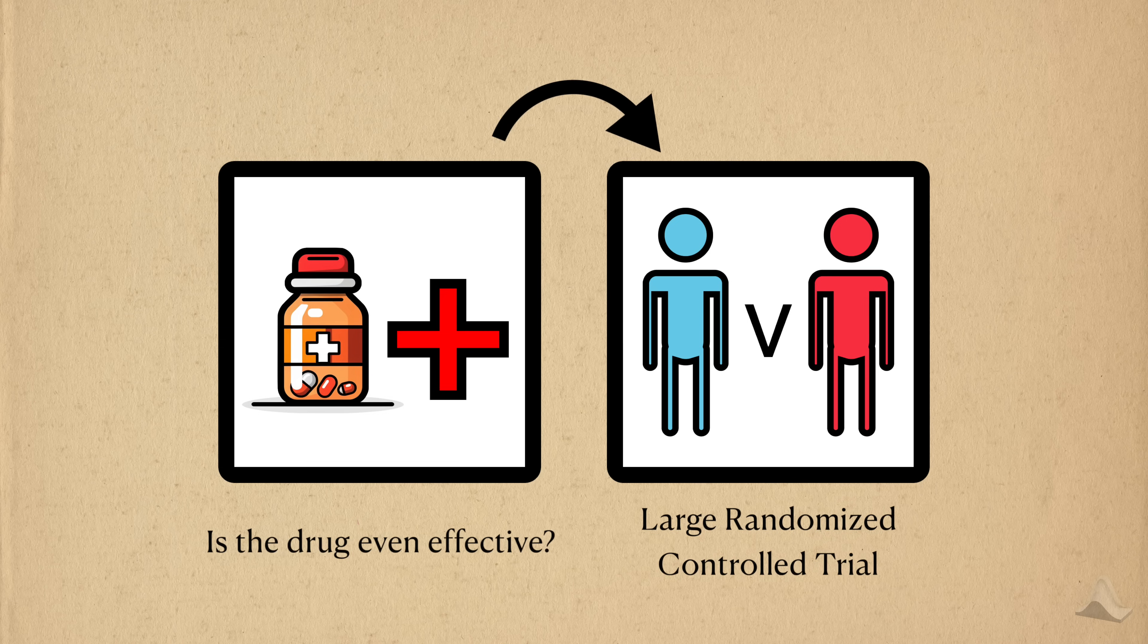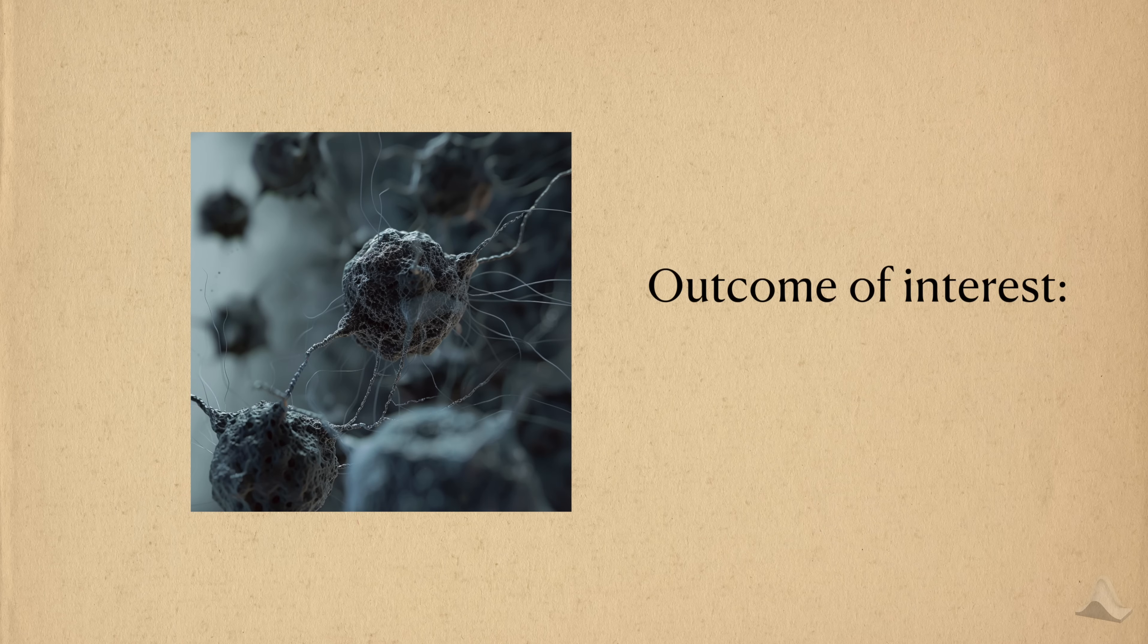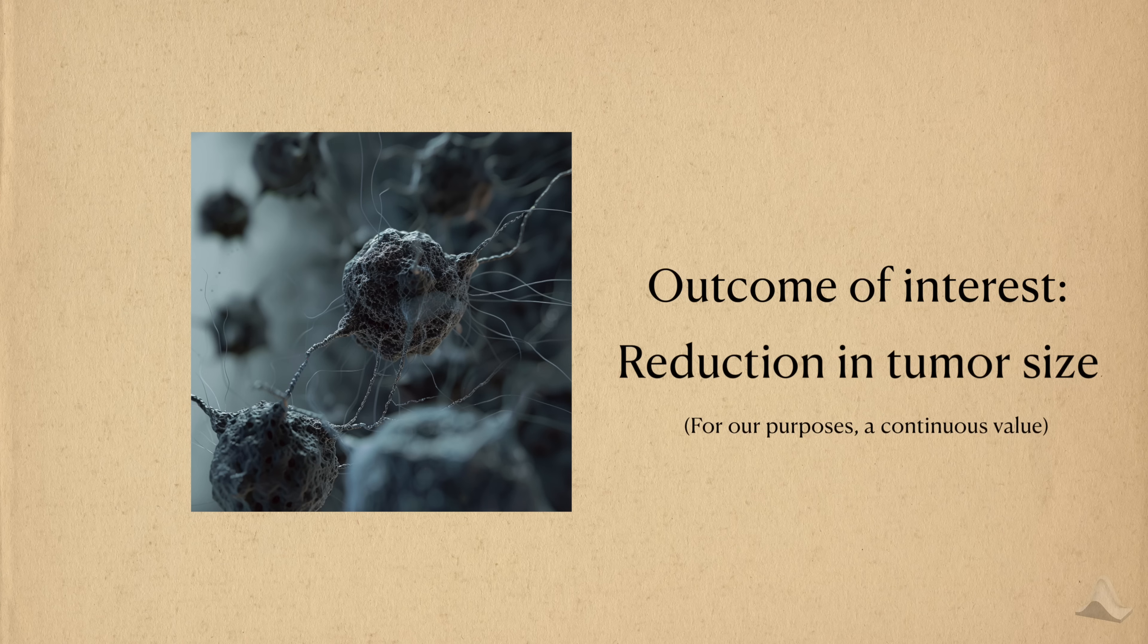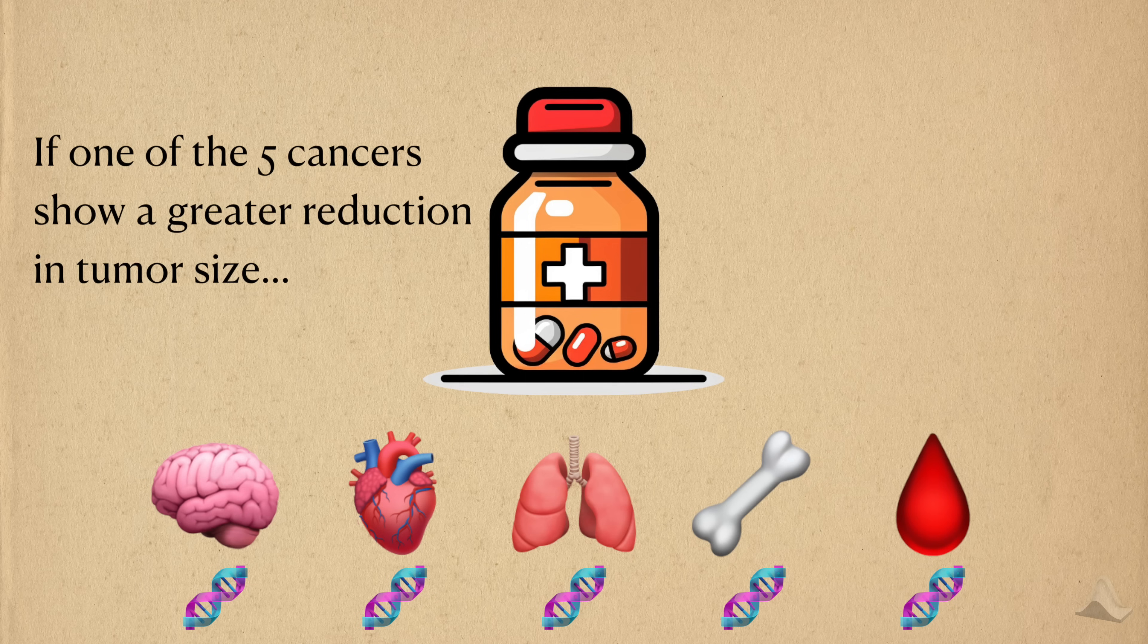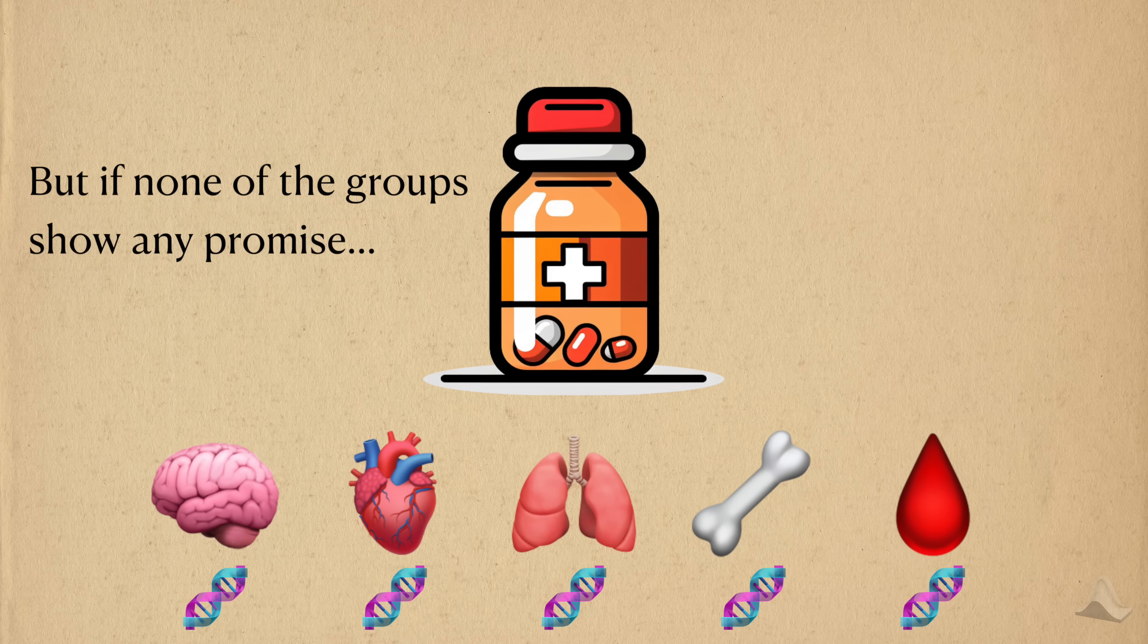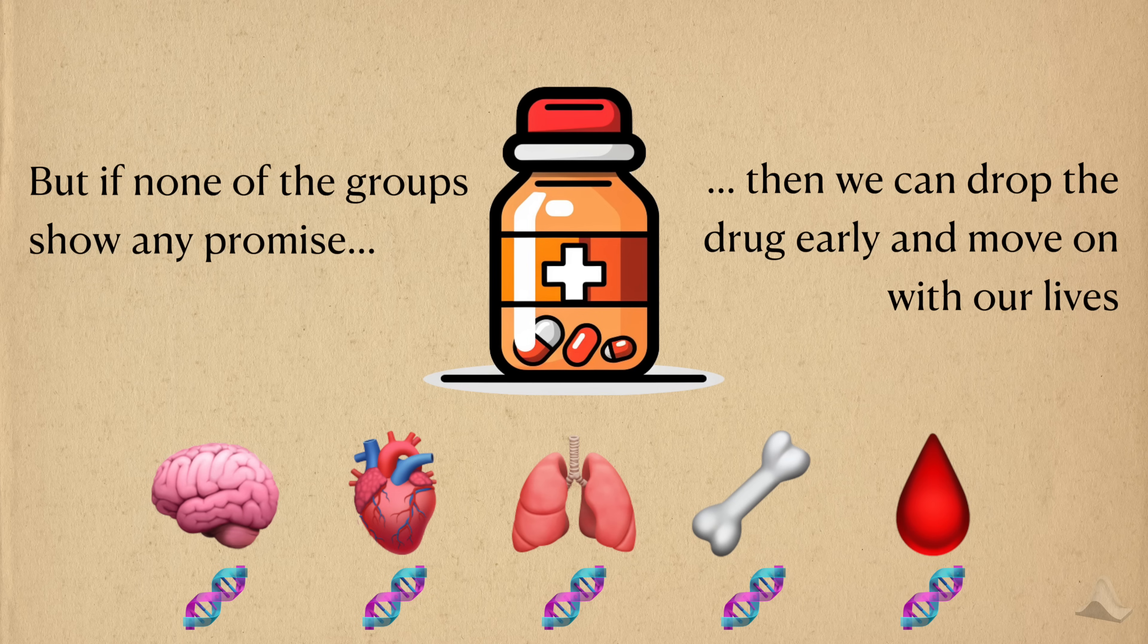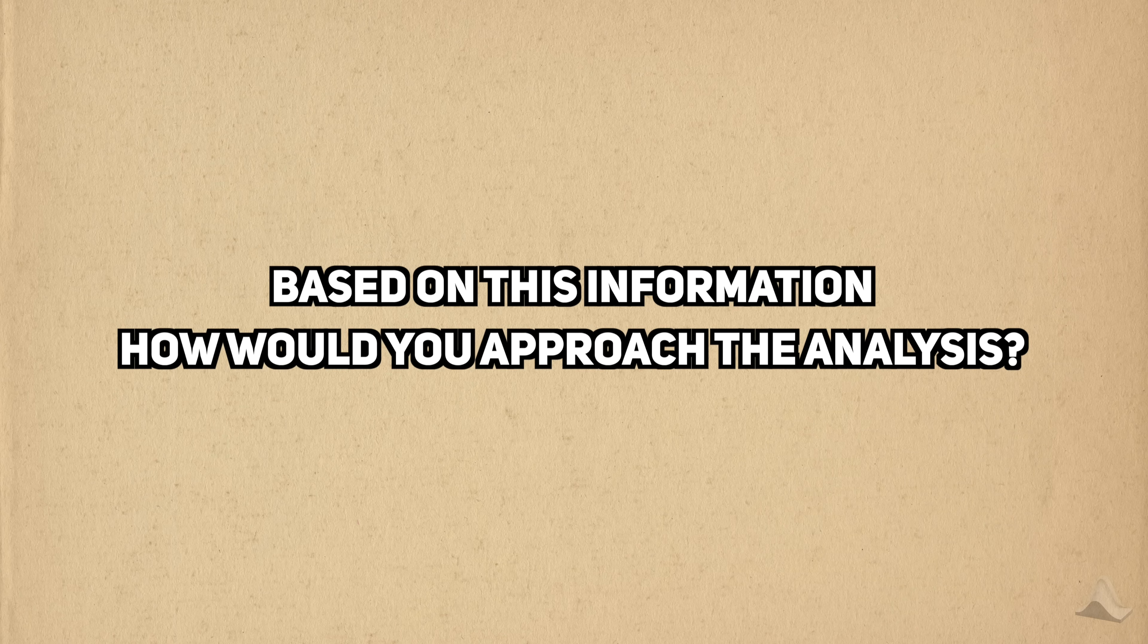If it does, then this cancer drug pair would have a good shot of succeeding in a larger trial. The outcome we're interested in is reduction in tumor size, which you can assume to be a continuous variable. If one of the five cancers show a higher than average decrease in tumor size, then that's exactly what we're looking for. But if none of them show a noticeable decrease, then we can ditch this drug sooner than later and move on to something more promising. Based on all of this information, how would you suggest we approach the analysis?